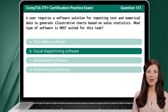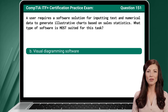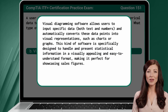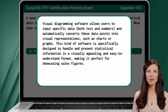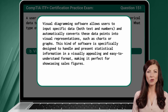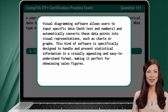The answer is B — visual diagramming software. Visual diagramming software allows users to input specific data, both text and numbers, and automatically converts these data points into visual representations such as charts or graphs. This kind of software is specifically designed to handle and present statistical information in a visually appealing and easy-to-understand format, making it perfect for showcasing sales figures.